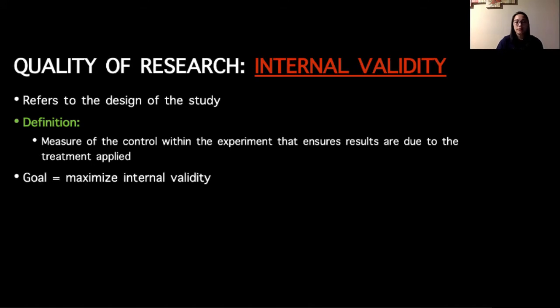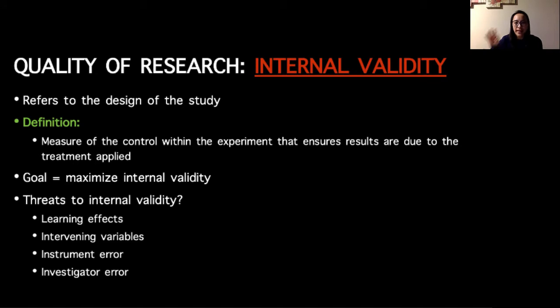So the goal in research, most often than not, is to maximize internal validity, and the way that we do that is paying attention and minimizing threats to internal validity. We'll go through examples of each of these, but threats to internal validity are oftentimes learning effects, intervening or extraneous variables, or instrument or investigator error.